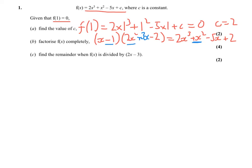It says for the next bit, find the remainder when f(x) is divided by 2x minus 3. So what it's asking you to do is to put this into your function and find out what pops out at the end.